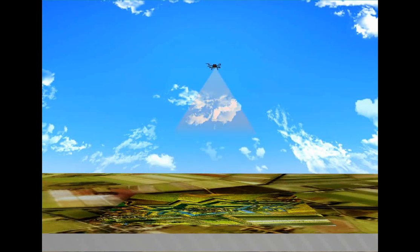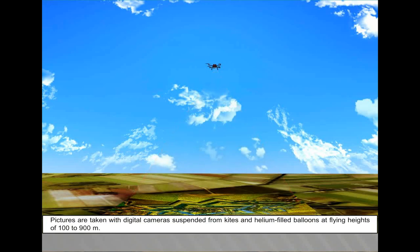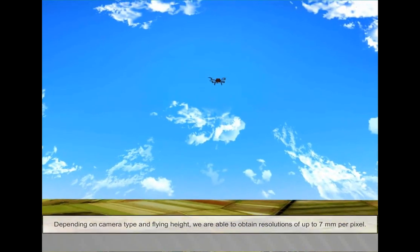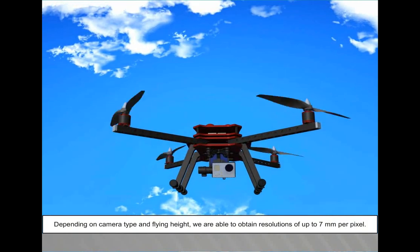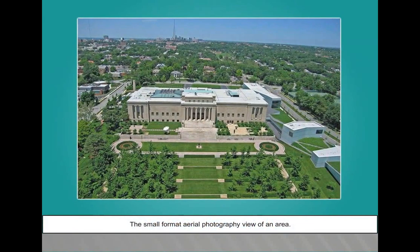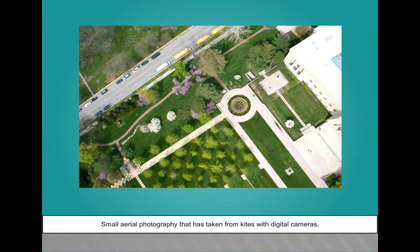Small format aerial photography allows us to obtain large-scale and high-resolution images of study areas. Pictures are taken with digital cameras suspended from kites and helium-filled balloons at flying heights of 100 to 900 meters. Depending on camera type and flying height, we can obtain resolutions of up to 7 millimeters per pixel.